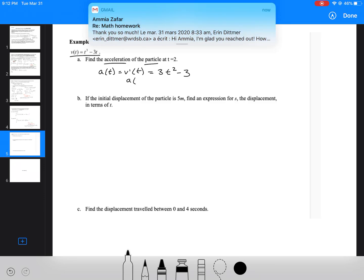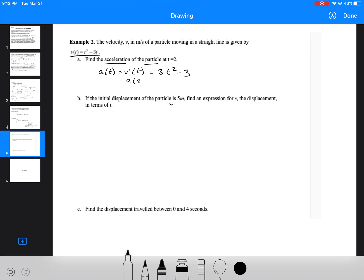This question is asking us to find the acceleration of the particle at 2, so we're going to plug in 2. This gives us our acceleration at 2: 2 squared is 4, 4 times 3 is 12, 12 minus 3 would be 9 meters per second squared.